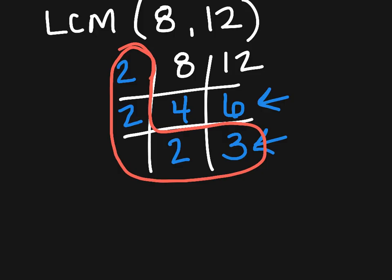Now I'm just going to multiply all these numbers to find what my LCM is. I know that 2 times 2 is 4, and 4 times 2 is 8, and 8 times 3 is 24.